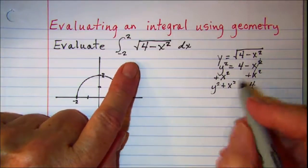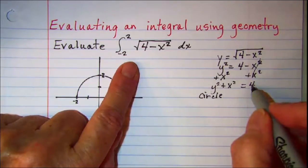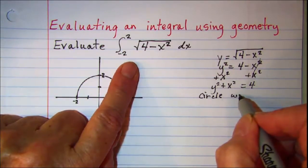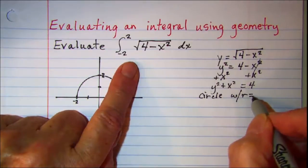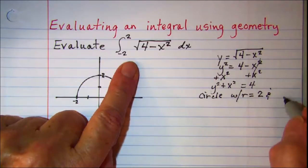This is the equation of a circle with radius equal to 2 and center at 0, 0.